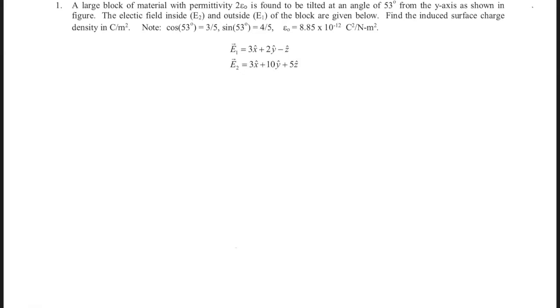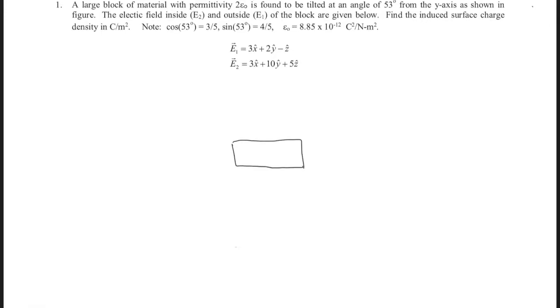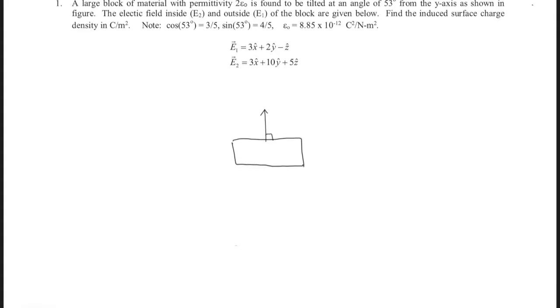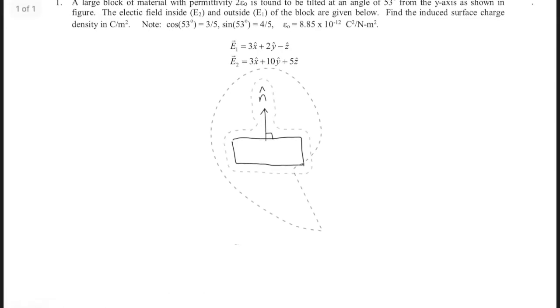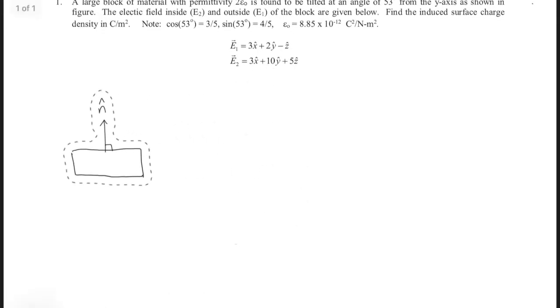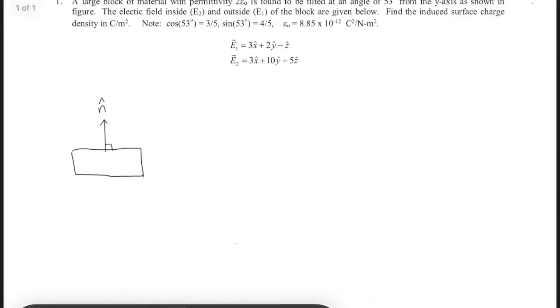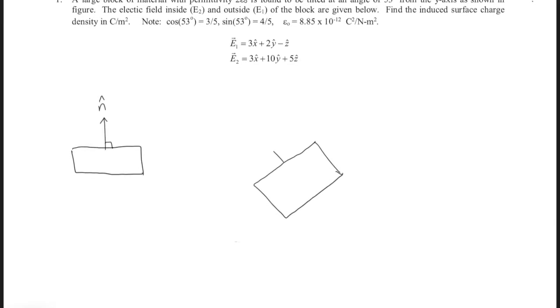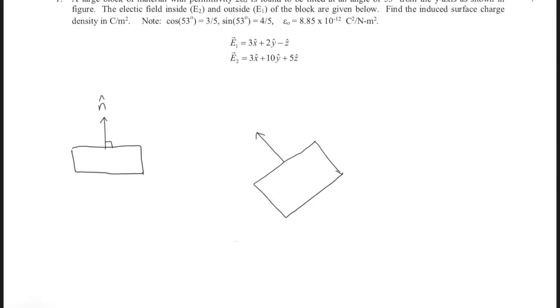So if we want to start, we can draw a block at 0 degrees. And we want to find the normal component of the d field. So if I were to draw a vector straight off the block at a 90 degree angle, we can call this n̂. Now, if we want to tilt this block by some degrees, I can redraw it like this. And my normal component, n̂, would be tilted the same degrees.